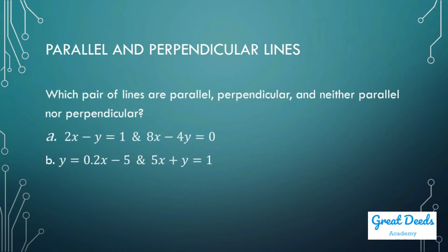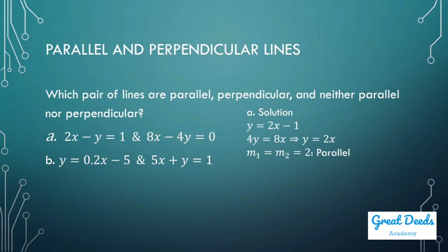Which pair of lines are parallel, perpendicular, or neither? Letter A: 2x minus y equals 1, and 8x minus 4y equals 0. We write both in slope-intercept form. The first line becomes y equals 2x minus 1, and the second becomes y equals 2x. They have the same slopes, therefore they are parallel.